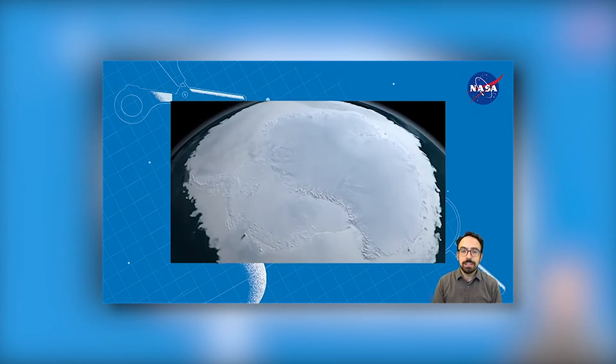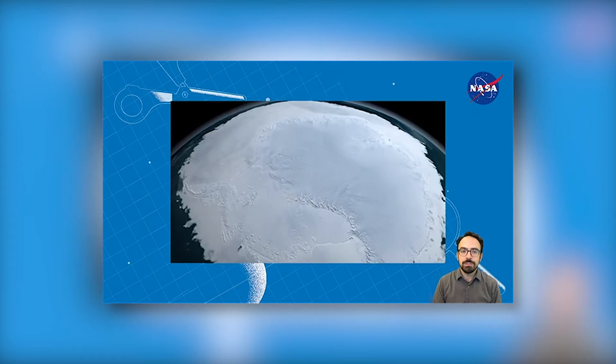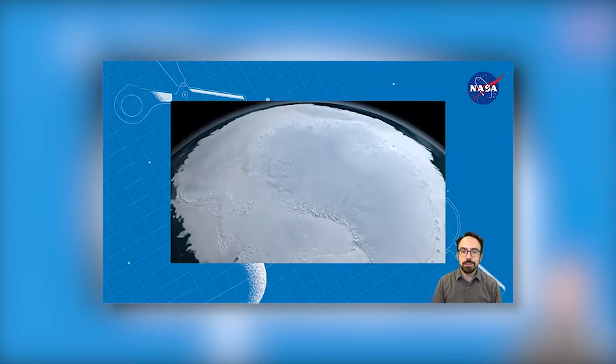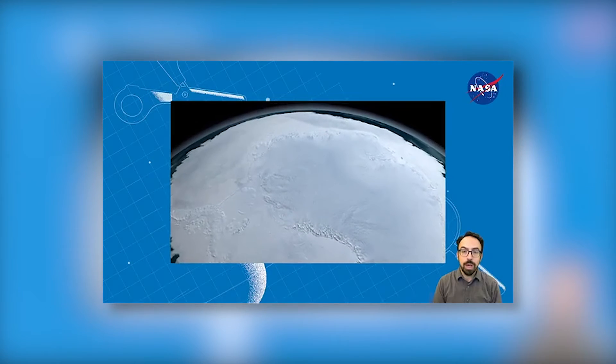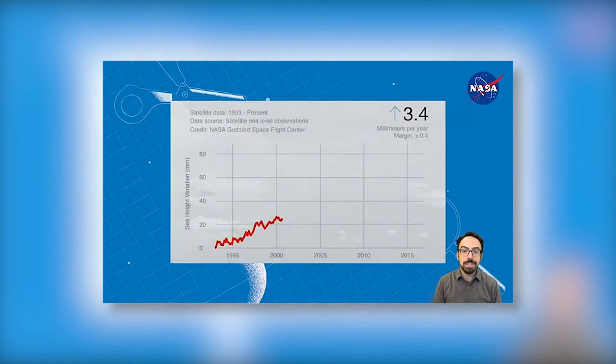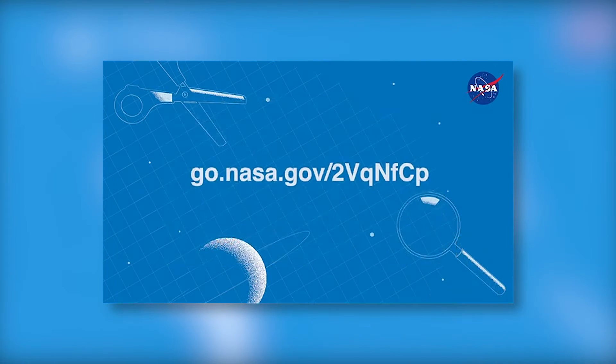Now that you've collected your data, think about what your observations mean for melting ice around the planet. In which container did the water rise more? Why do you think that occurred? How does that compare to your prediction? Based on what you observed, does the melting of Earth's glaciers on land contribute to sea level rise? For more details on this activity, and links to other sea level and Earth science projects you can do at home, visit the URL on the screen, or click the link in the video description.